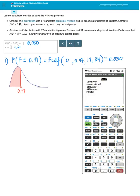17 degrees of freedom for numerator. 34 degrees of freedom for denominator. Press enter a couple of times to get your result.